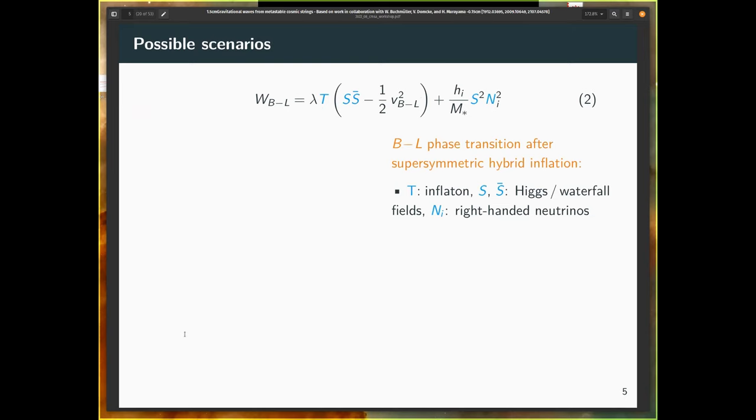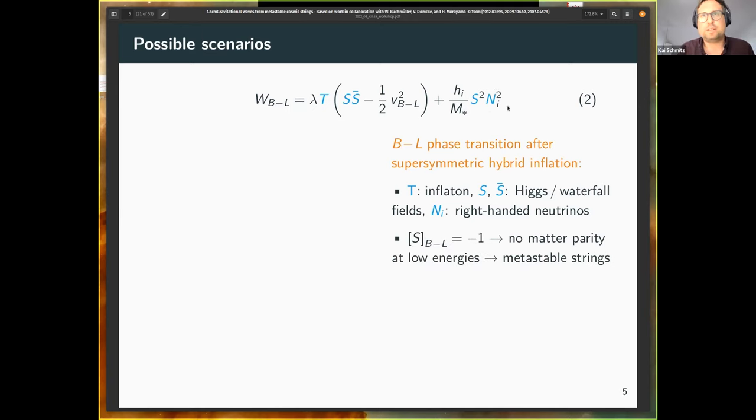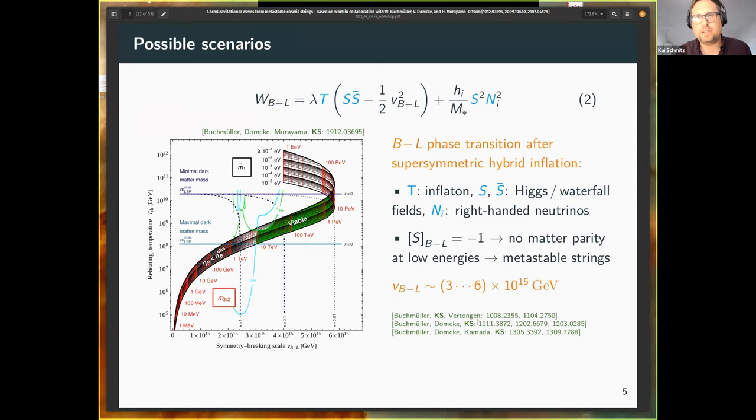Before we go on with the technical description and our estimate of the gravitational wave spectrum, let me present two simple examples, two scenarios, microscopic theories where we actually produce a network of metastable cosmic strings. The first one is the breaking of B minus L in the early universe, in that case, after inflation. In a supersymmetric description, you may start with such a superpotential, some inflaton field, some B minus L Higgs fields, S and S bar, and some neutrino fields. The last operator here on the right-hand side is responsible for generating the neutrino masses upon symmetry breaking. If it's such a higher-dimensional operator, we can assign B minus L charge of minus 1 to the Higgs field, and that means that no R-parity survives at low energy. We really just break down everything to the standard model gauge group. There's no remaining Z2 R-parity, and in that case, the U1 breaking really leads to a network of metastable cosmic strings and not stable Z2 strings.